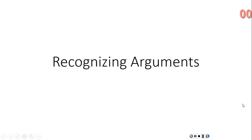Hello, welcome to our second lecture for Phil 102: Critical Thinking and Reasoning. Today we will talk about recognizing arguments. We already learned what an argument is — it has premises and a conclusion, where the premise or premises are intended to provide evidence for the conclusion, and the conclusion is supposed to logically follow from the premises.